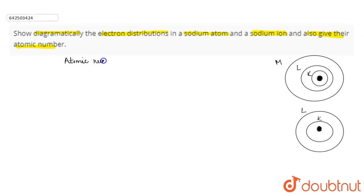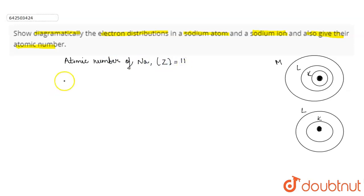First of all, the atomic number of sodium is 11, and the mass number of sodium is 23.